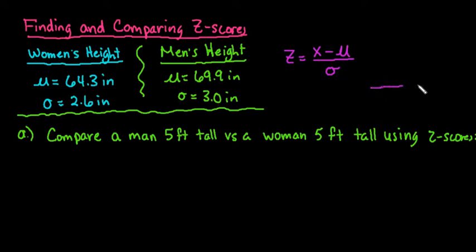We will use that to help us make a decision as to which is more unusual. So when we use a z-score, we're referring to the standard normal model.